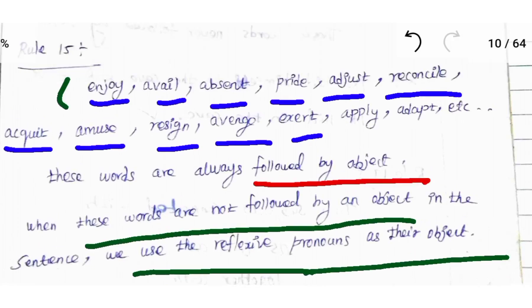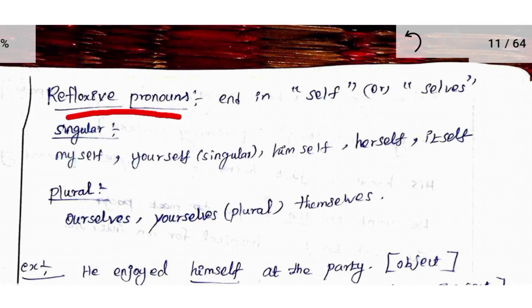To understand: these words are always followed by object. Suppose these words are not followed by an object, we use reflexive pronouns as their object.